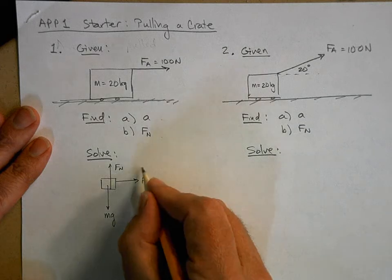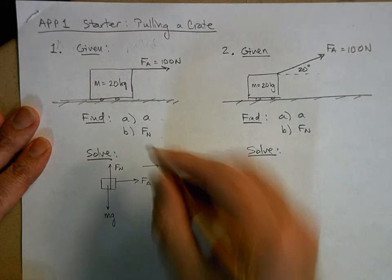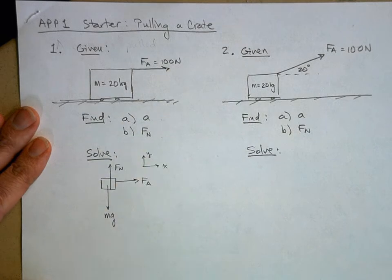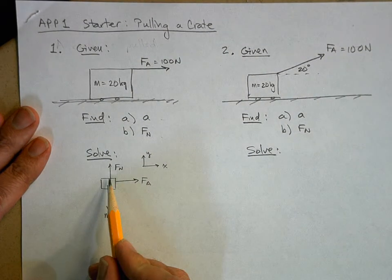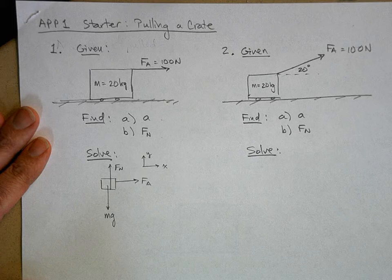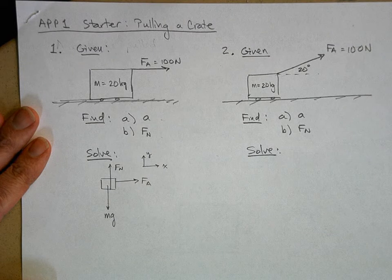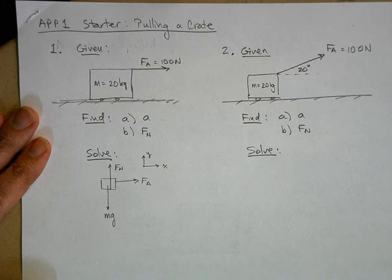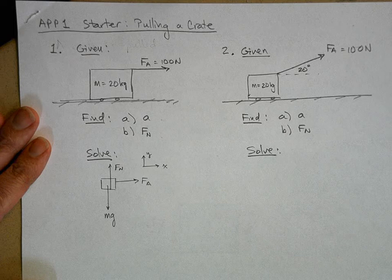Let's do step three. I'll make this my x direction and this my y direction. Now all of these forces — the normal force, the weight, and the applied force — they're already lined up with either the x or the y axis. So do I need to break them up into components? No, they're already lined up with my axis system. So I'm done with step three.